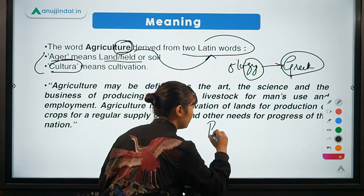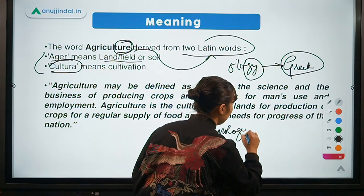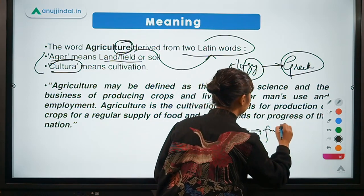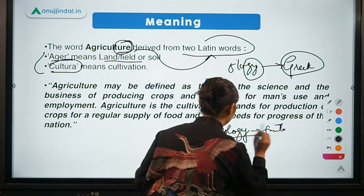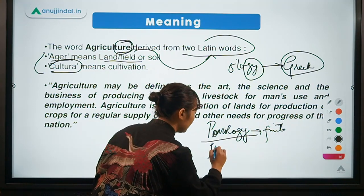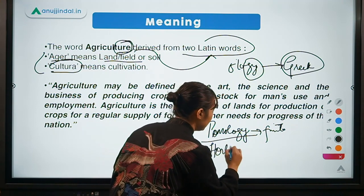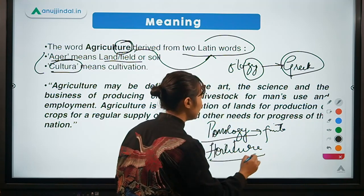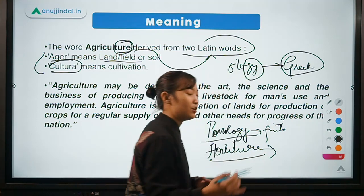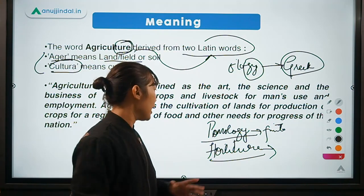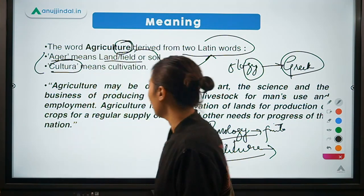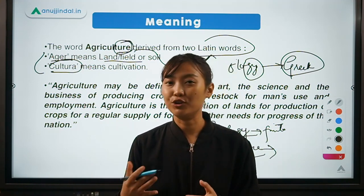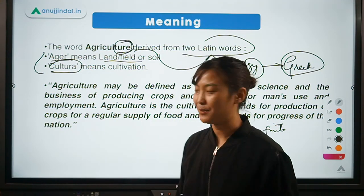We will come into the full definition of pomology later, but pomology is the study of fruits. Another example is 'horticulture' — since it has '-ture' at the end, it is derived from Latin. Horticulture is the study of vegetables, fruits, ornamentals, etc. This is how you can remember where these words are derived from, which will make it easier to remember in the exam.